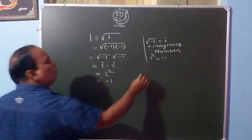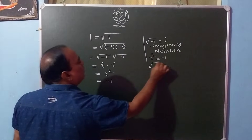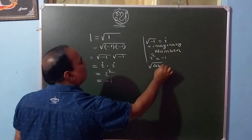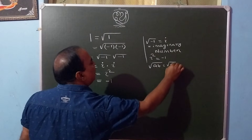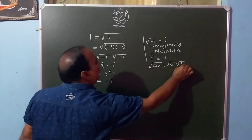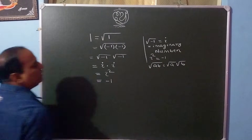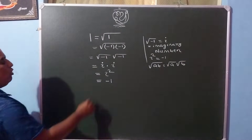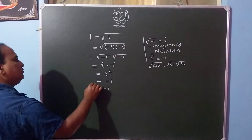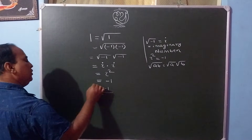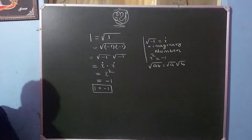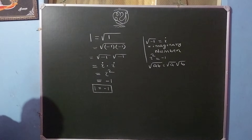We know root over of AB is equal to root over of A into root over of B. So 1 is equal to minus 1. Here we get 1 is equal to minus 1.